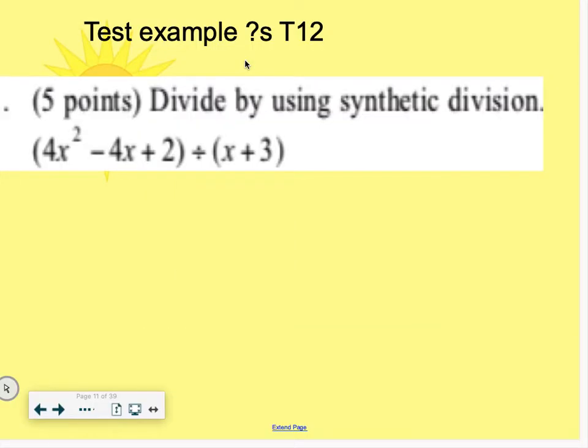So here are the basic test examples for target 12. The first one is using synthetic division, and this can be done with synthetic division because our divisor is x plus a number or x minus a number as a binomial like that.